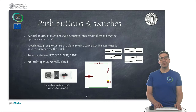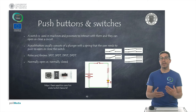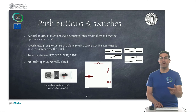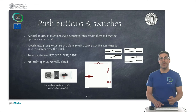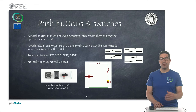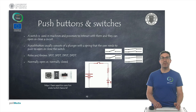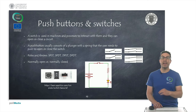Push buttons and switches are used in machines to interact with them — to manually open or close a circuit. A push button usually consists of a plunger with a spring that the user pushes to open or close the internal switch. There are different configurations depending on how many contacts they have and whether they are normally open or normally closed.